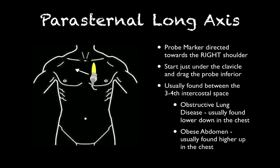For the parasternal long axis, start with your probe marker towards the patient's right, directed somewhere between 9 and 11 o'clock depending on the orientation of the patient's heart. I like to start right under the collarbone and drag down — most of the time it will be in the third or fourth intercostal space, but it can be higher with abdominal obesity or lower with COPD. Just start high and drag down until you see motion.